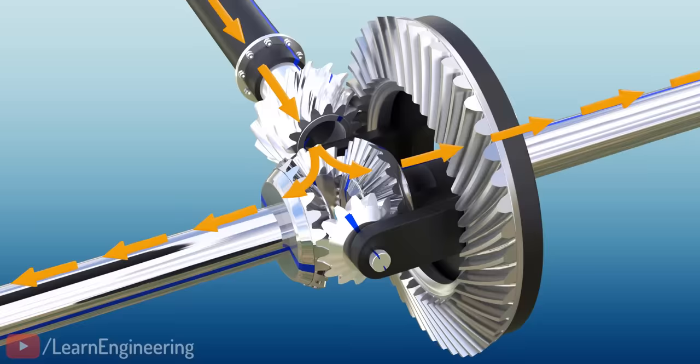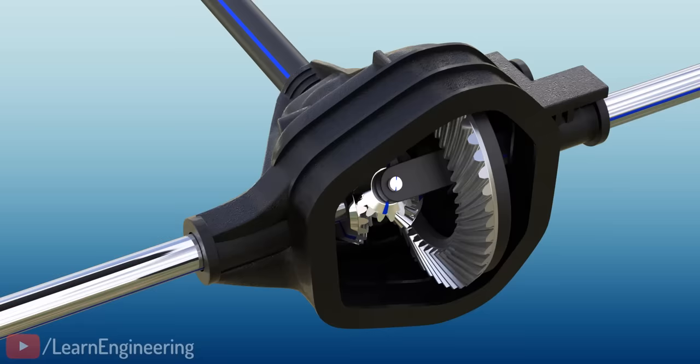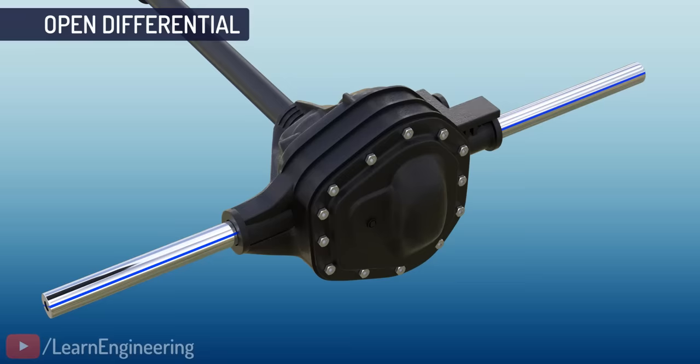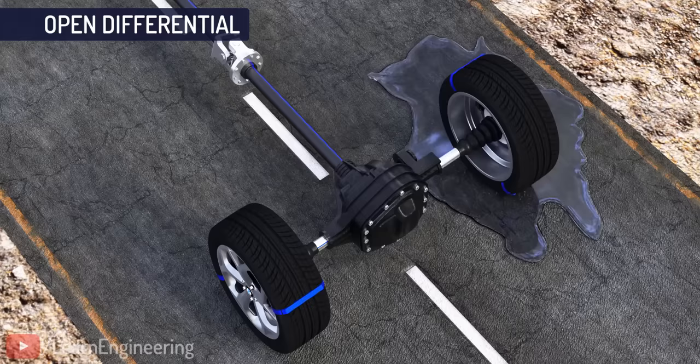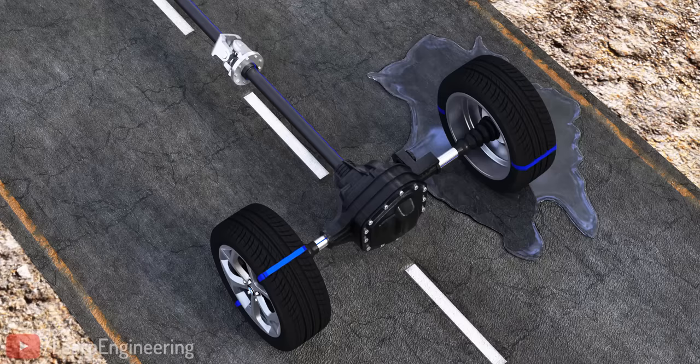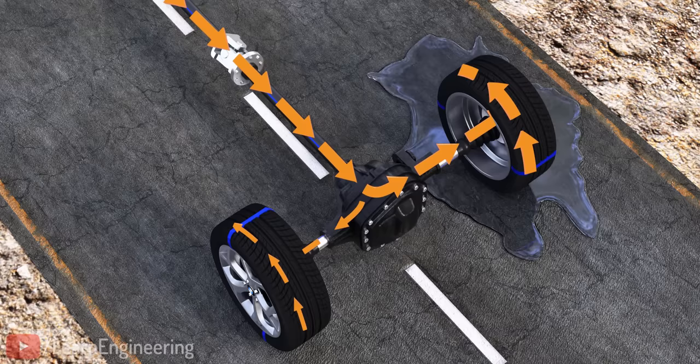The differential we have gone through so far is known as an open or standard differential. It is capable of turning wheels at different RPMs, but it has one major drawback. Consider a situation where one wheel is on a surface with good traction and another wheel is on a slippery track. In this case, a standard differential will send the majority of the power to the slippery wheel, so the vehicle won't be able to move.